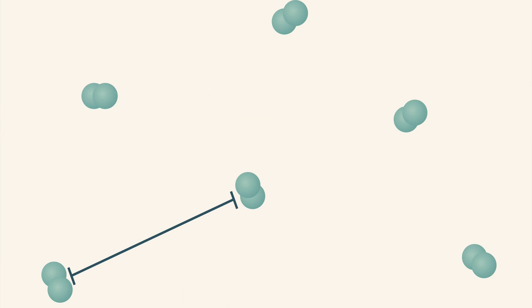At room temperature, the distance between particles of a gas in a closed container is about ten times the diameter of a particle. That distance can be changed, and there are several factors that affect it.